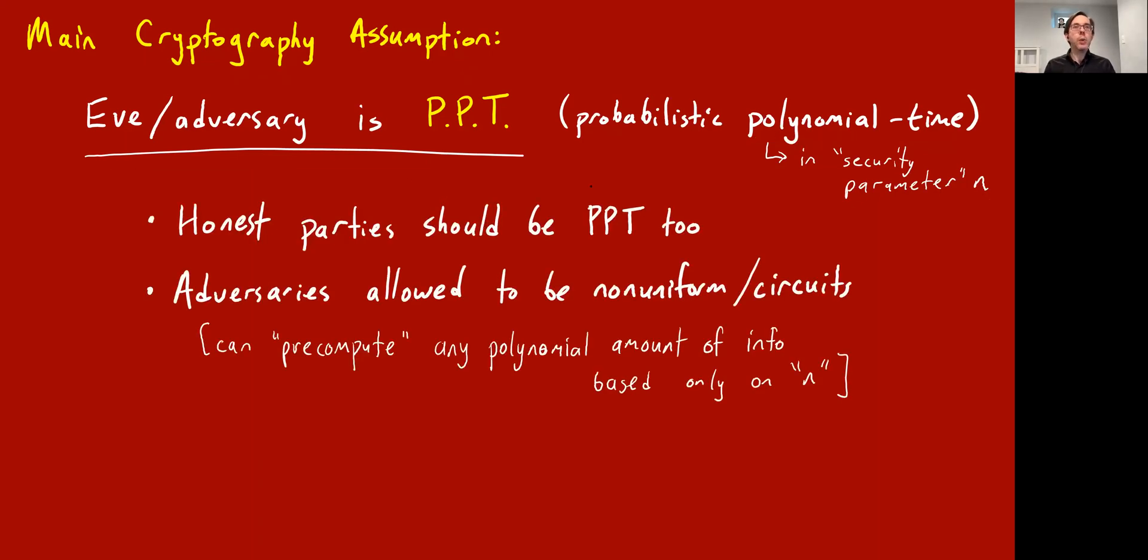Okay, indeed, as I said, you usually model all the honest parties as also being, probably, let's say, polynomial time algorithms. And there's one more detail which does come up in cryptography. I don't want to dwell on it too much, but generally in cryptography theory, you allow the adversaries to be non-uniform models of computation.